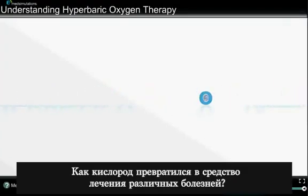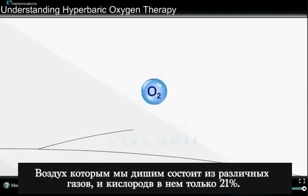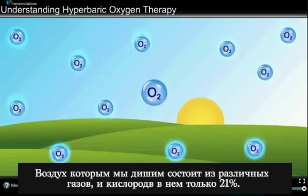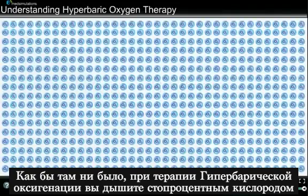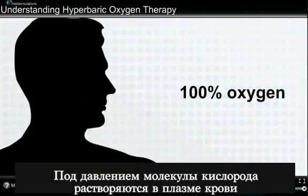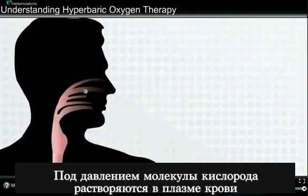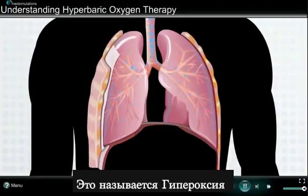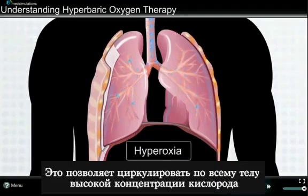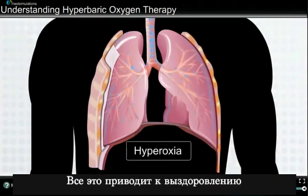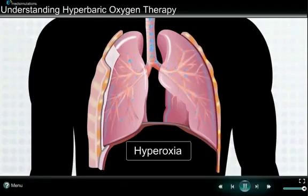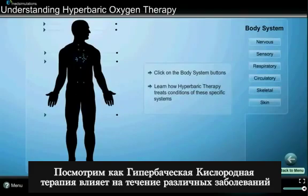How does oxygen become a drug to treat various conditions? Normally the air that you breathe is a mixture of gases, with oxygen accounting for about 21%. However, during hyperbaric therapy, you will breathe 100% oxygen under pressure, causing the oxygen to dissolve into the plasma within your blood. This is known as hyperoxia. It also allows for higher concentrations of oxygen to flow through the body, including areas with limited blood flow, resulting in improved healing.